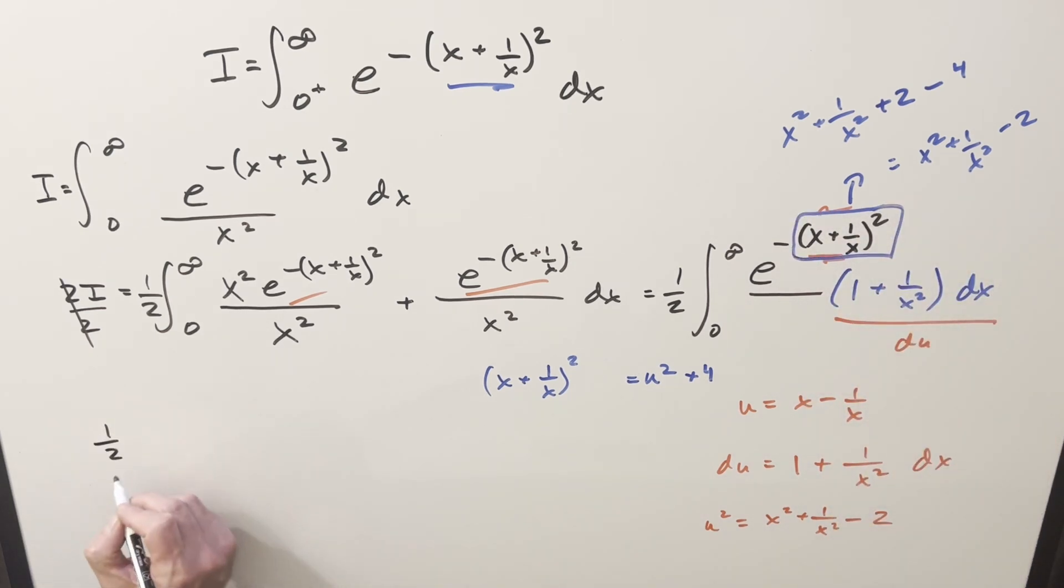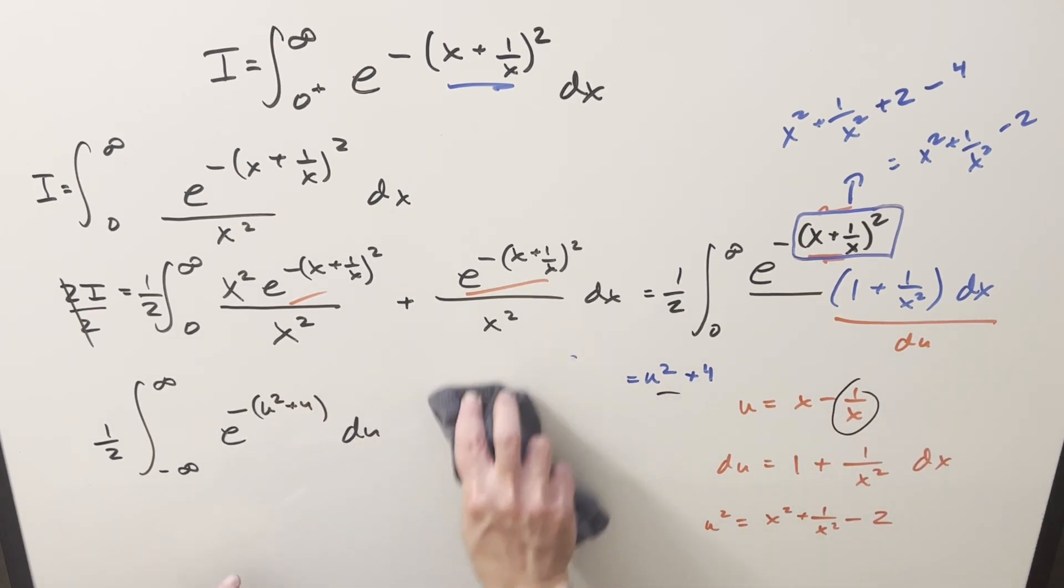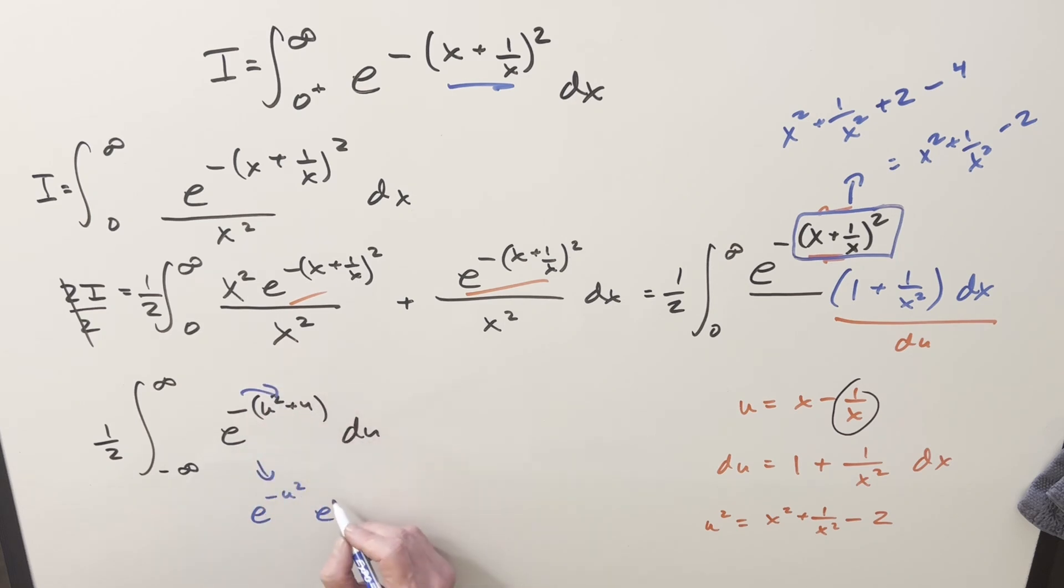So now we'll do the substitution. We've got the 1 half in front. When we plug in infinity here, this is going to be infinity. This piece is going to 0 here. So this is just going to be going to infinity for the upper bound. You plug a 0 in here. This part's 0, of course. This part's infinity. But now we've got a minus sign in front. So this piece is going to minus infinity. Then we're going to have e minus this thing, which is u squared plus 4. And then everything else is just du. And then here we can just split this up using exponent properties. So what's going to happen, I can break this up as e minus u squared times, distributing in the minus sign, e to the minus 4.